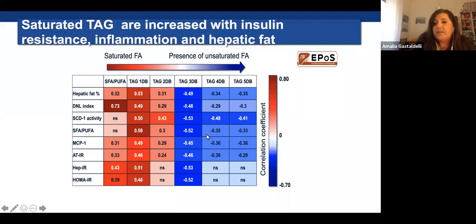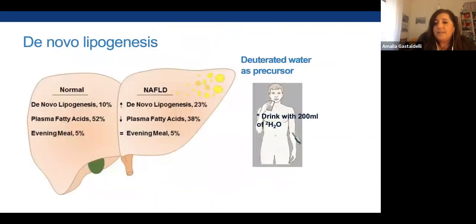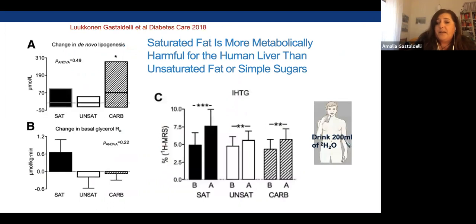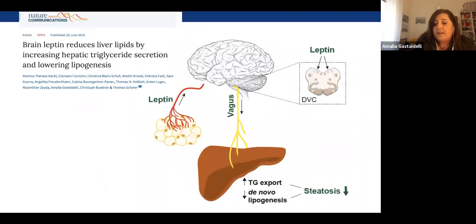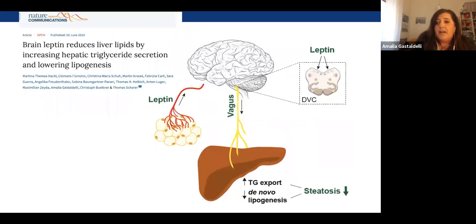Finally, regarding de novo lipogenesis: this can also be measured using deuterated water. Studies have shown that there is an increase in fat accumulation and in de novo lipogenesis when there is excess carbohydrate in the diet, while excess saturated and unsaturated fat has no effect on de novo lipogenesis — but it does stimulate hepatic fat accumulation by stimulating triglyceride synthesis.